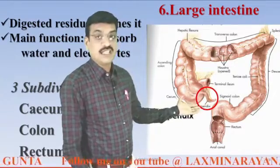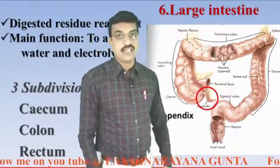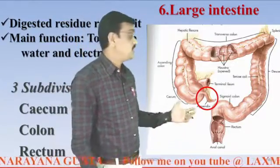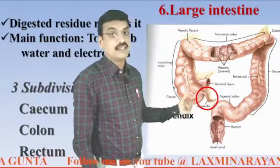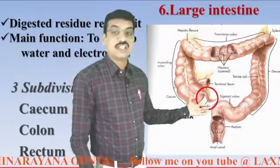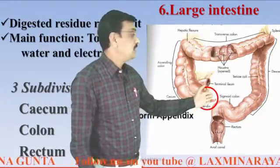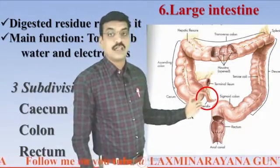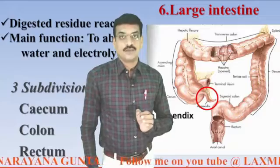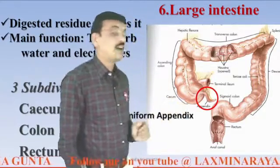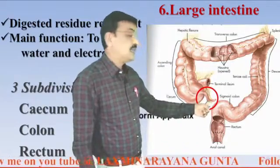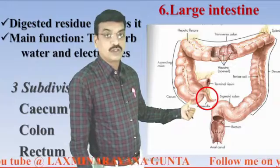The vermiform appendix and cecum are vestigial organs. Previously, these structures were helpful to humans when they used to take grass, leaves, etc., which are abundant in cellulose, and humans depended on the vermiform appendix and cecum for cellulose digestion. As we now depend on glucose, carbohydrates, proteins, and fats, cellulose digestion stopped, and these organs became vestigial. The human body consists of nearly 180 vestigial organs, that's why humans are called a walking museum of antiquities.